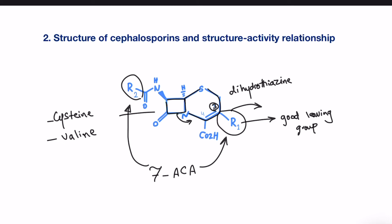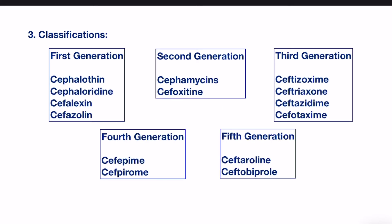These cephalosporins are generally classified into five generations. The first generation includes cephalothin, cephaloridine, cephalexin, and cephazoline. In general, these agents have a lower activity than penicillin, but they have a better range of activity.